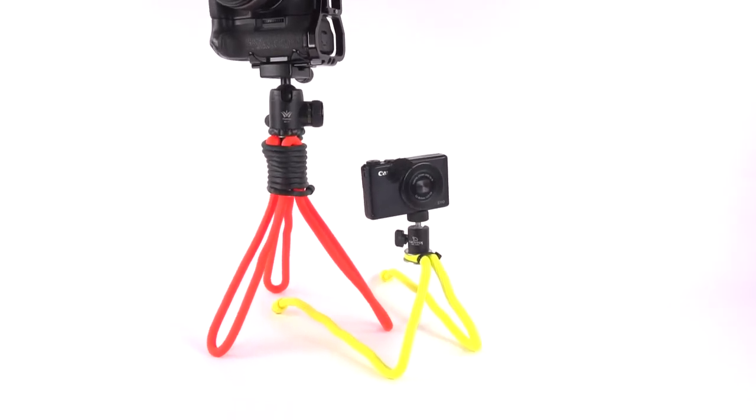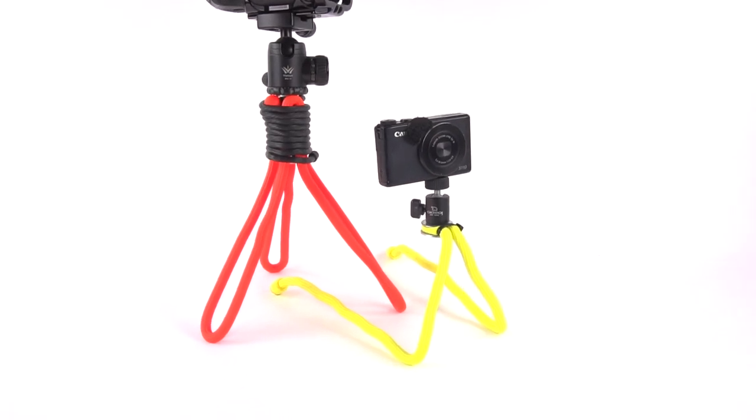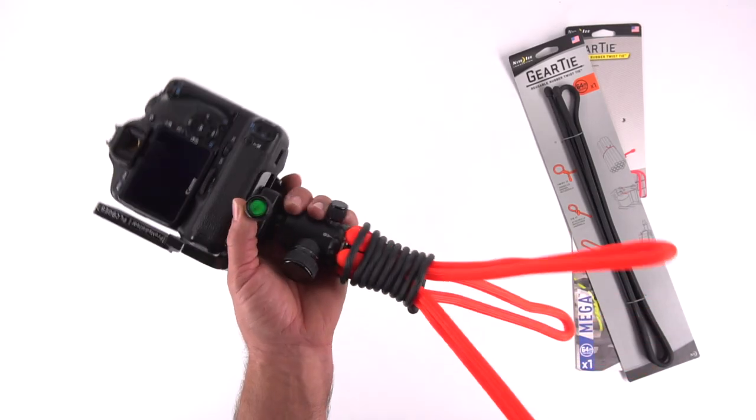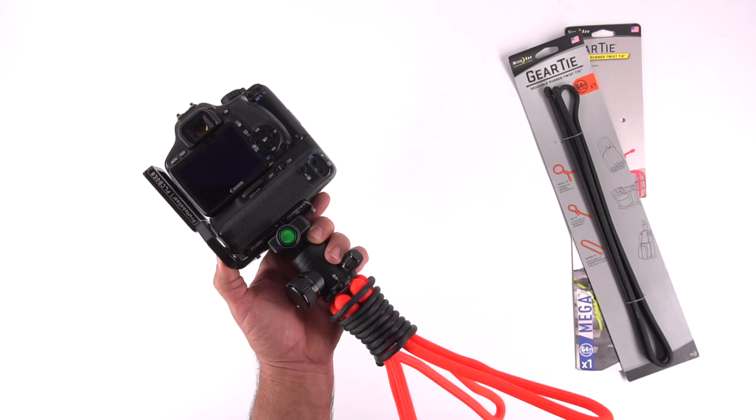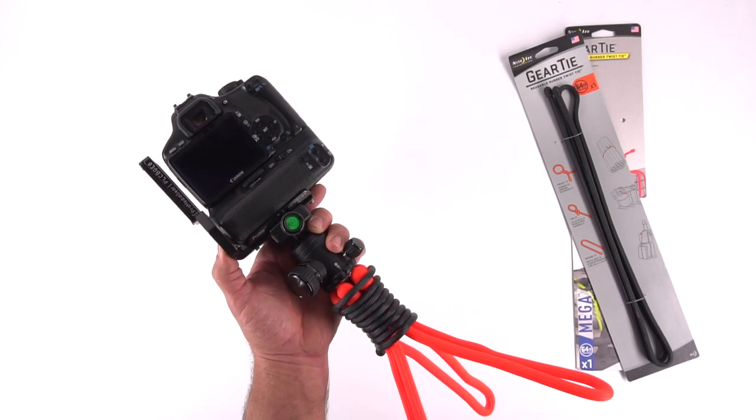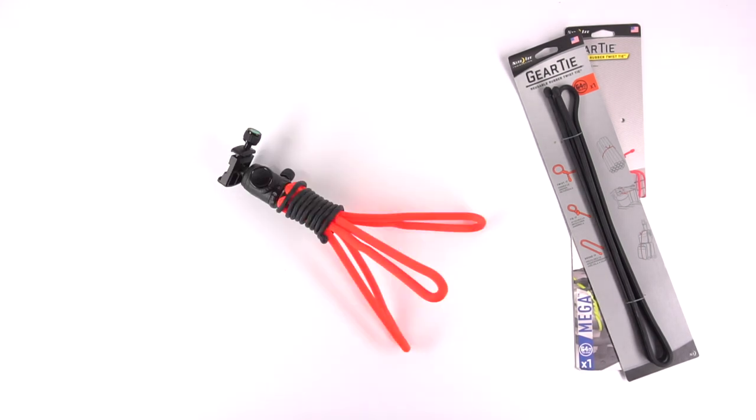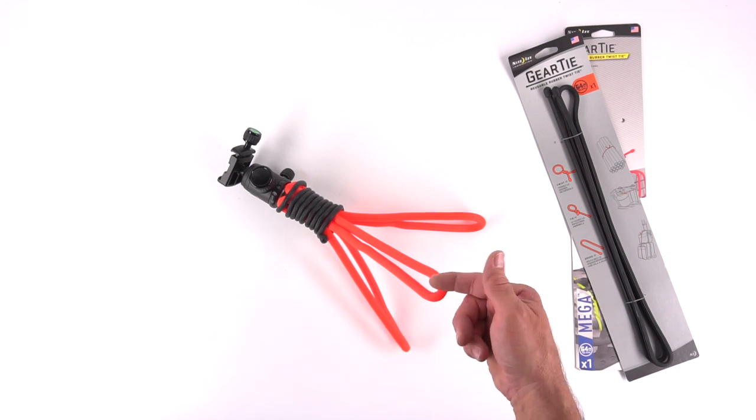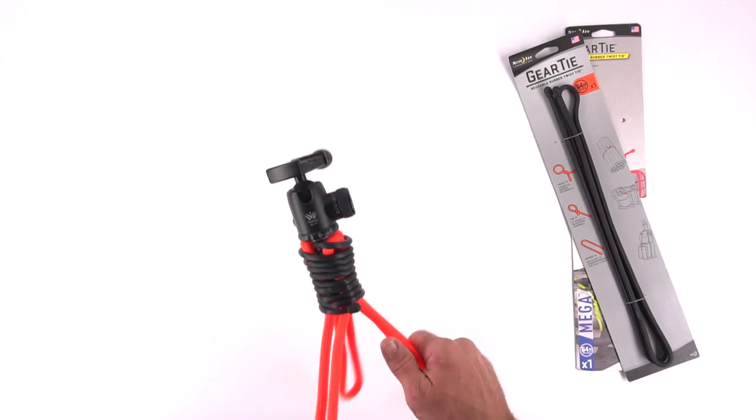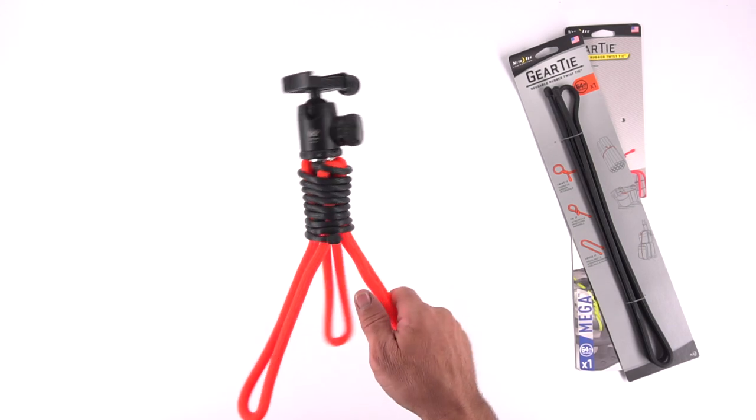But this is our DIY version made out of gear ties. And this thing will hold up a massive camera. Something like the 1DC would be fine on this DIY version. Let's take this thing apart and see how to put it back together. It's super simple.